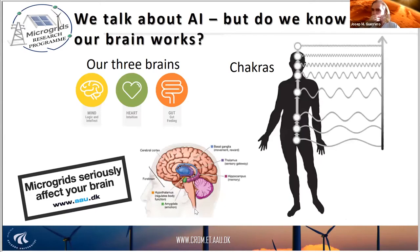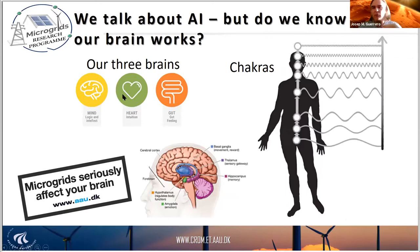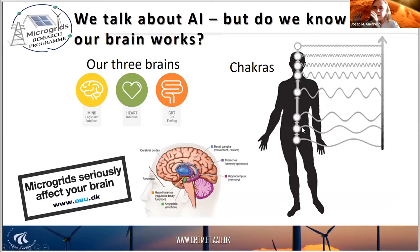Now is the moment that we have to find ways to integrate more renewables. Many people are talking about artificial intelligence, but do we really know how our brain works? It's interesting to see that we actually have three brains. We have 80,000 million neurons in our mind, but it has been discovered that in our heart we have 40,000 neurons, and in our gut — the digestion system — we have 500 million neurons, the equivalent of a cat's brain. So it's really a distributed system.